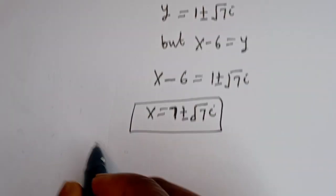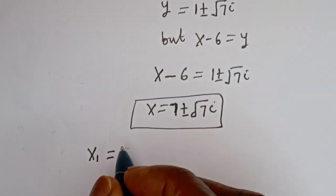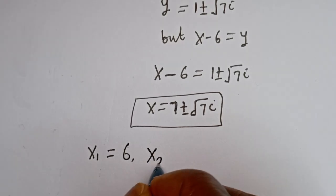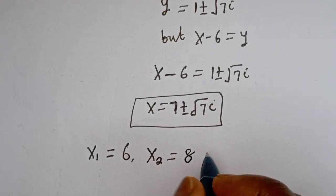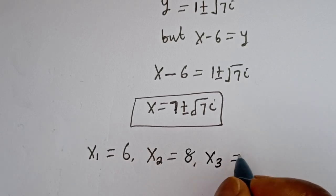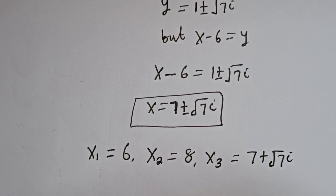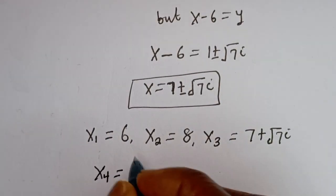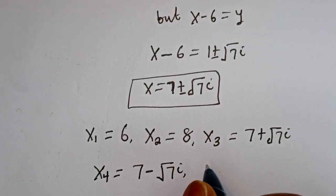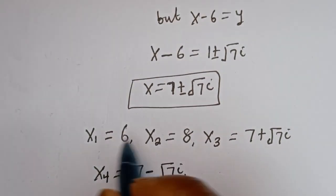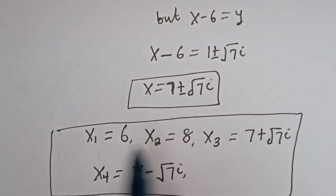Therefore our final answers are: x₁ equals 6, x₂ equals 8, x₃ equals 7 plus √7·i, and x₄ equals 7 minus √7·i. These are the final answers. I hope you enjoyed the video. Thank you for watching. Please don't forget to like, share, comment and subscribe to my channel. Bye bye.